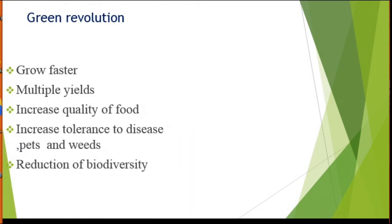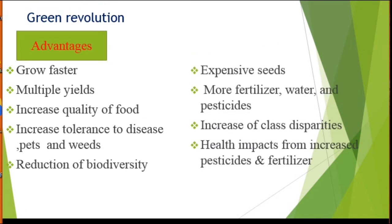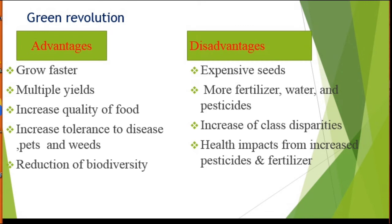Every coin has two sides. Green Revolution is more beneficial, but it also has some drawbacks. Starting with advantages: crops grow faster; Green Revolution contributed to quantitative expansion of farming; use of high yielding variety of seeds gives more production; increased quality of foods; increased tolerance to disease, birds and weeds; and production of biodiversity.